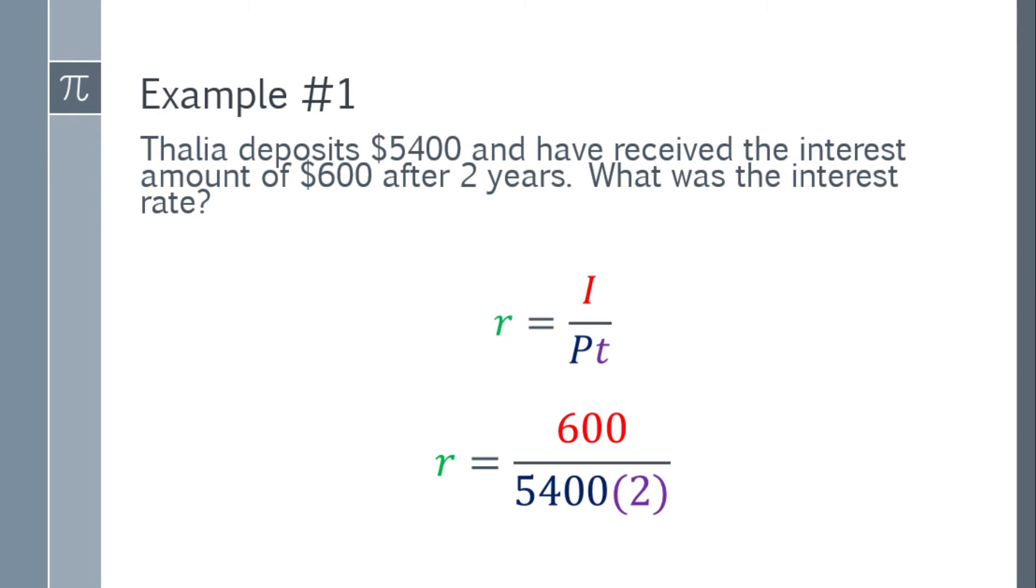So lagin natin yung given. We have R equals $600, that's the interest amount, over the quantity $5,400 times mo ng 2. Because 2 years, yung time, tapos $5,400, yung naman yung principal.